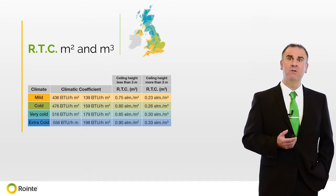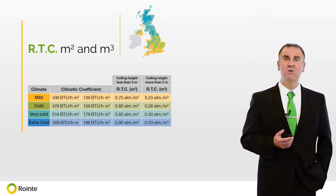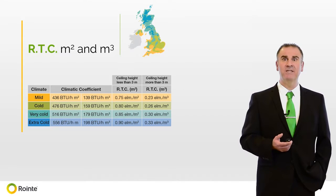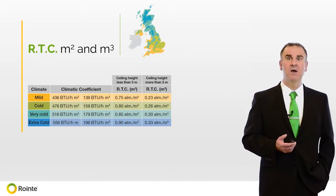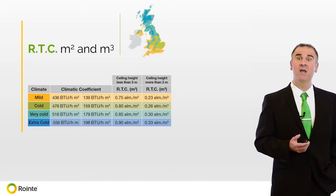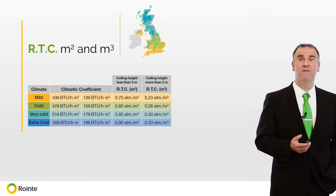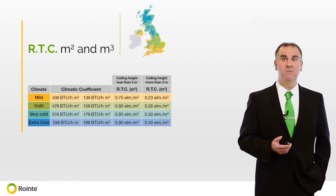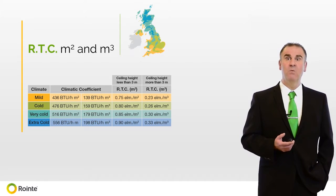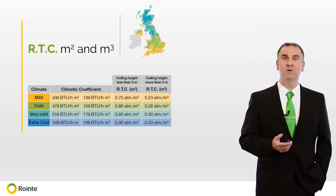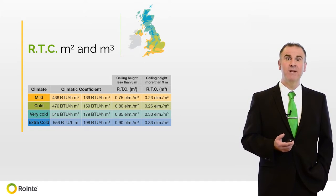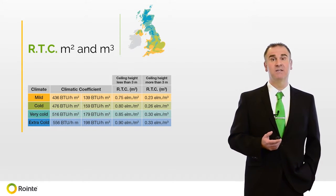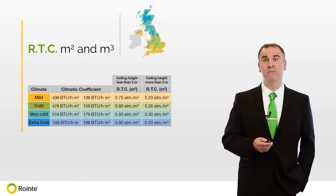In this table we show not only the climatic coefficient for each zone, but most importantly the Rowente thermal coefficient for metres squared and metres cubed. With this information we can calculate the number of Rowente elements required to heat a room.